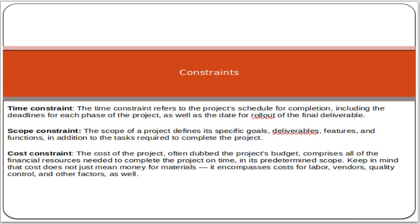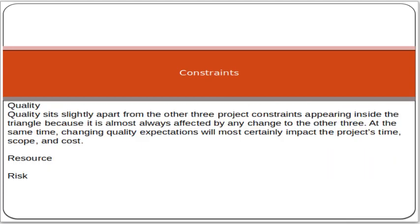The scope constraint means the scope of a project is defined in specific goals, deliverables, features, and functions, in addition to the tasks required to complete the project – you must complete the scope that has been decided and agreed per the scope document. The cost constraint means a cost has been decided at the initial stage of the project; for example, five thousand dollars is the agreed cost, and you must complete the project within that particular cost.